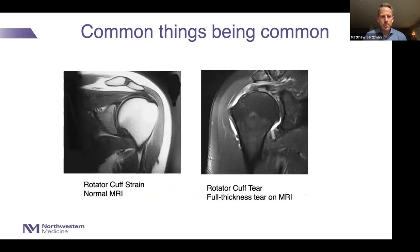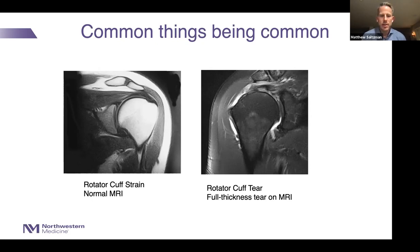Common things being common: if somebody sustains a shoulder injury and their MRI looks normal with no structural tear in the rotator cuff, that could be a rotator cuff strain. That's different from an MRI showing a full-thickness rotator cuff tear retracted to the middle aspect of the humeral head.